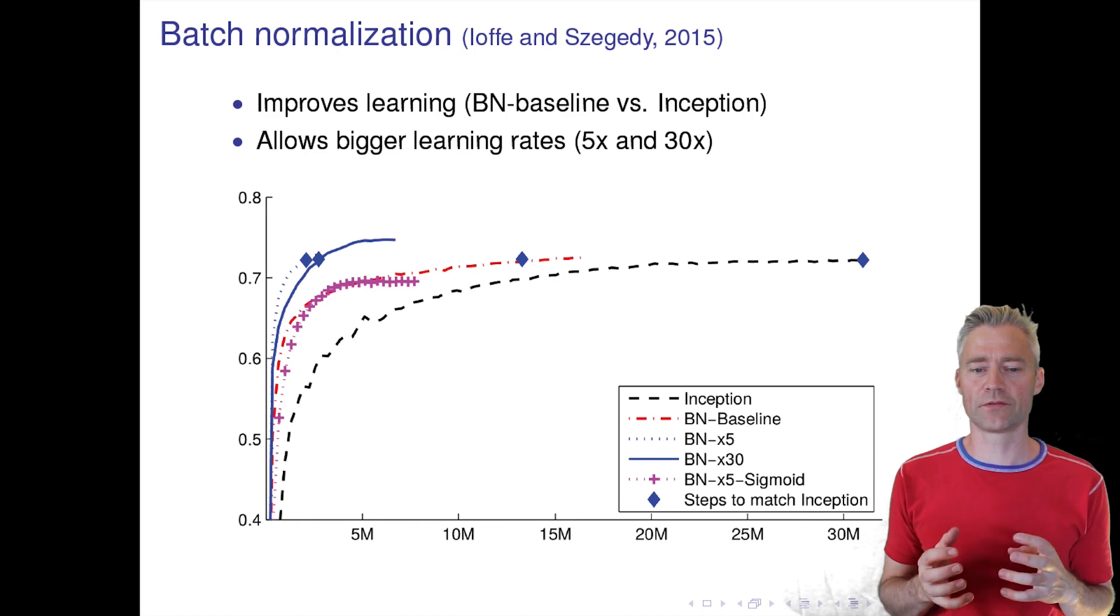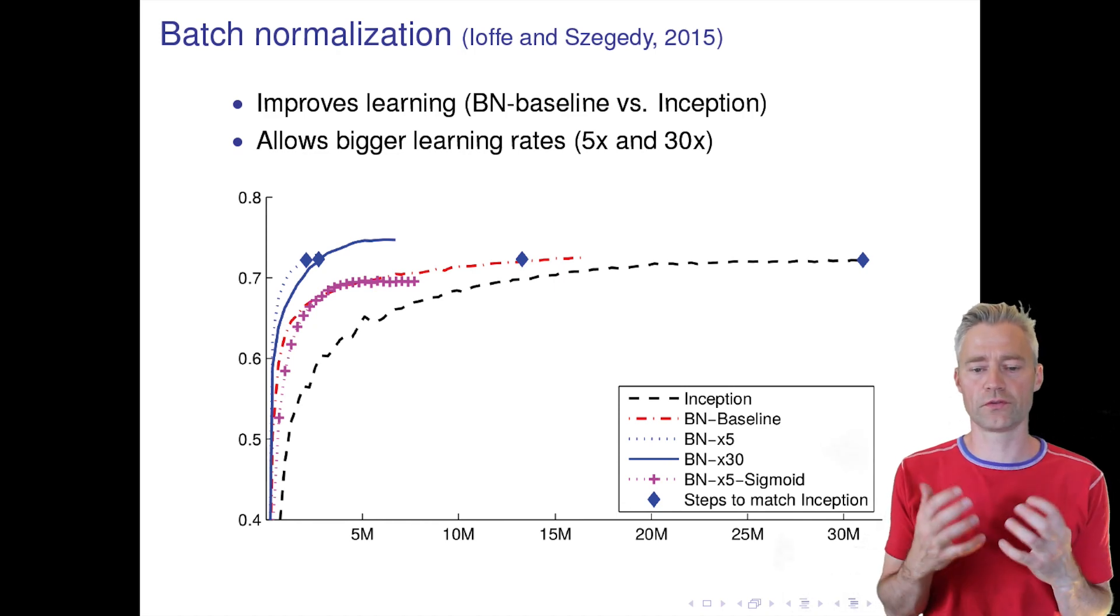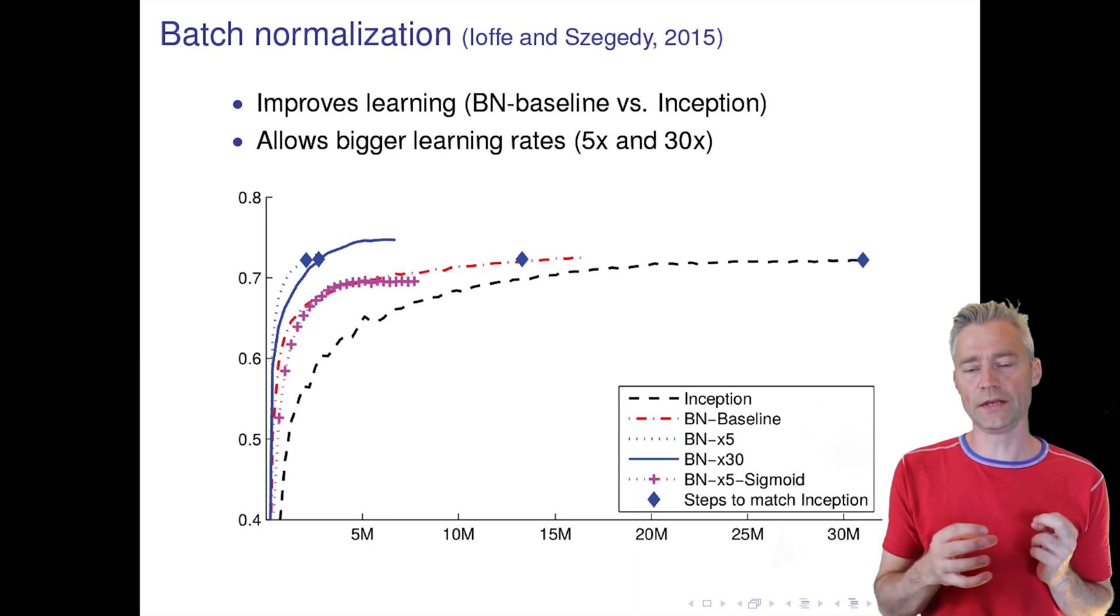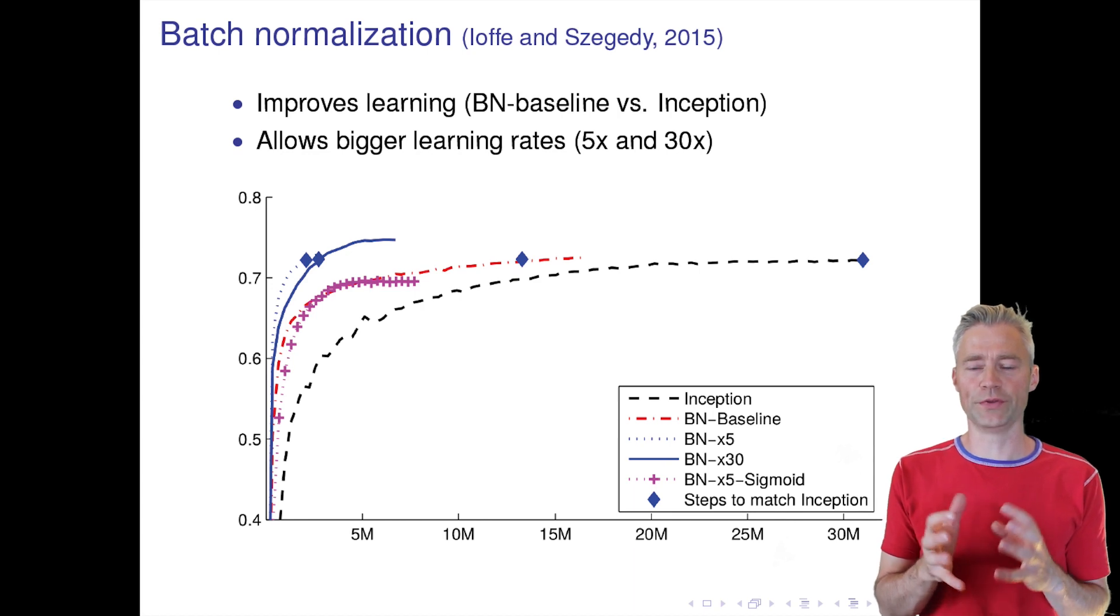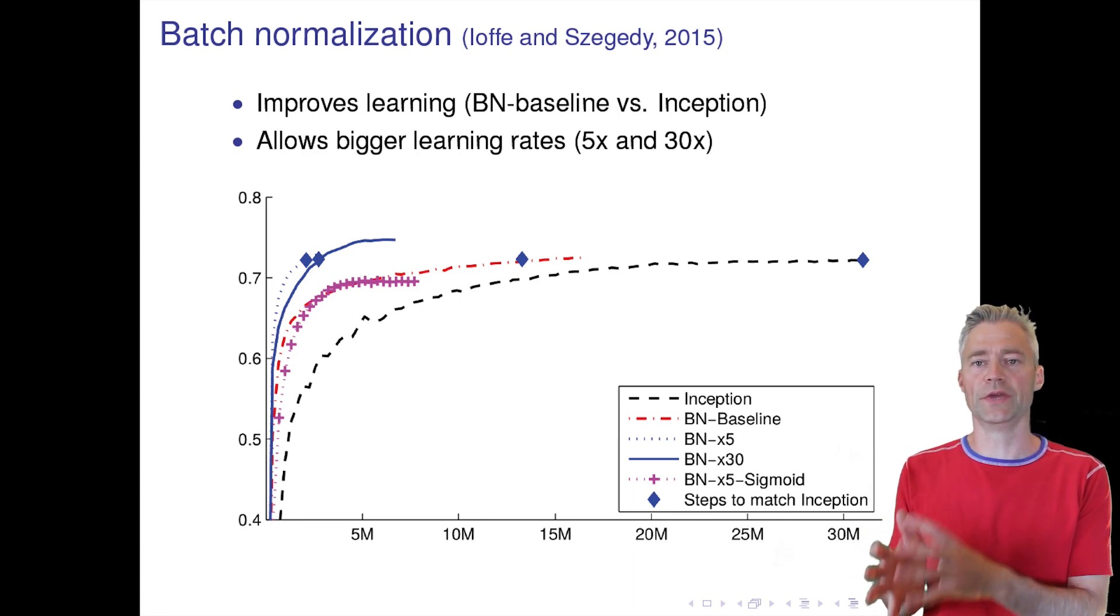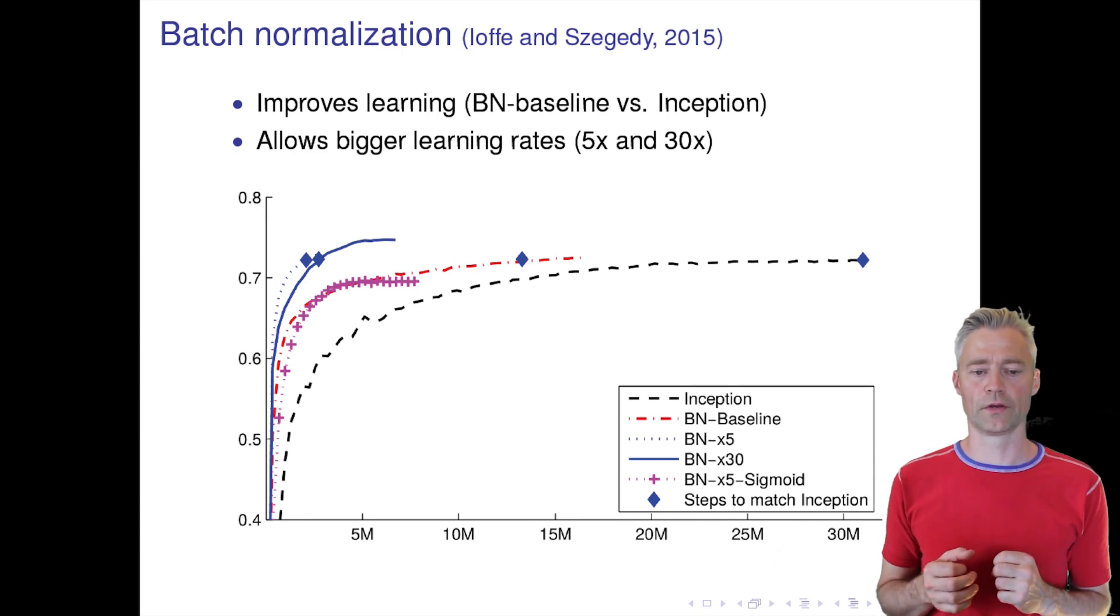You can sometimes do regularization by introducing noise, and this is a way to introduce noise because we subtract this mean over the mini-batch and we divide by the standard deviation over the mini-batch. These are quantities that would be noisy in the respect that they change from mini-batch to mini-batch, so in a way we confuse the network by having different noise—different mean and different standard deviation—introduced in each batch, and this helps overfitting.